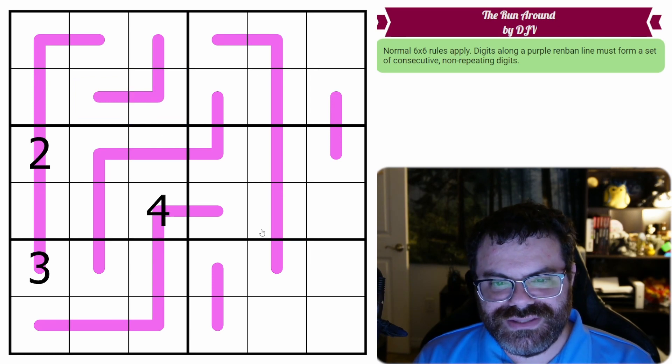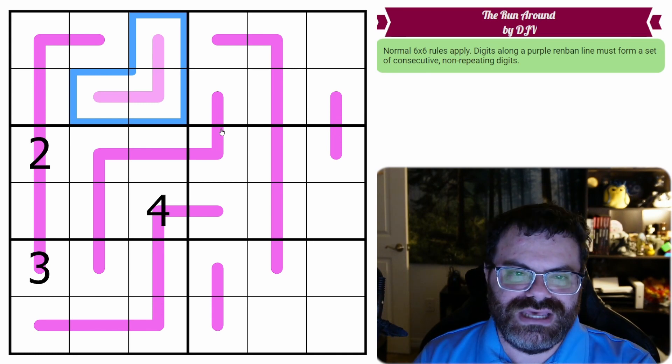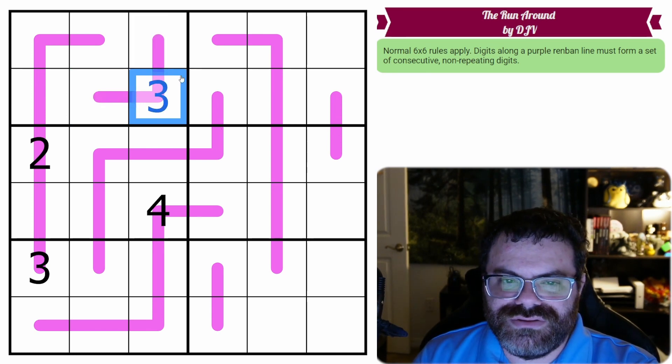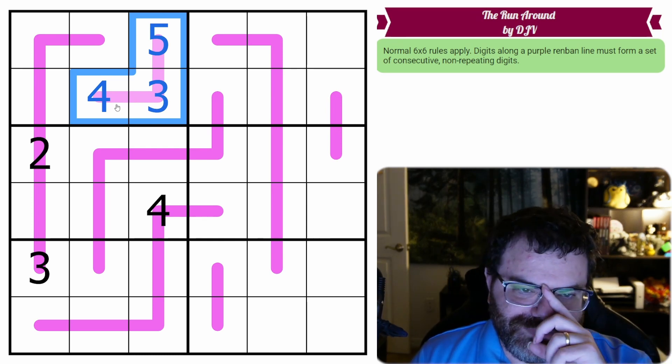So for the length of the line, you say this line, length 3, you pick a set of consecutive digits, like 3, 4, 5, and then you put them in any order you want. So 3, 5, 4, for example. So this would be a viable fill for this RenBand.